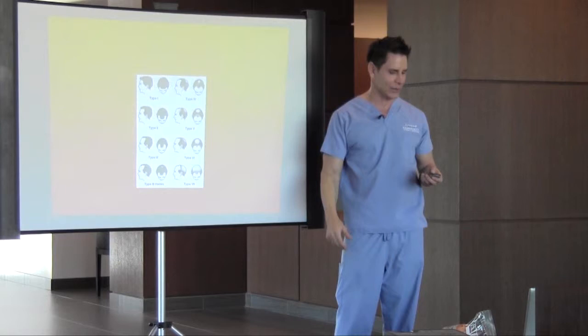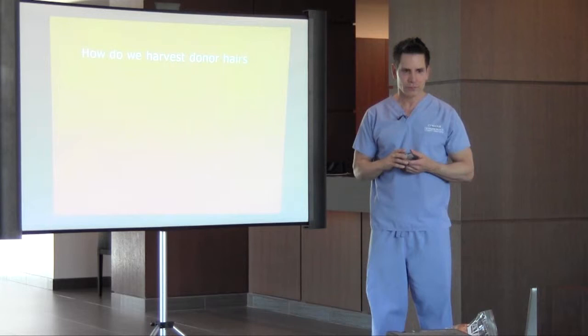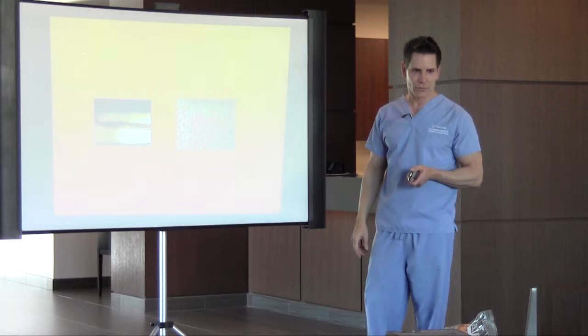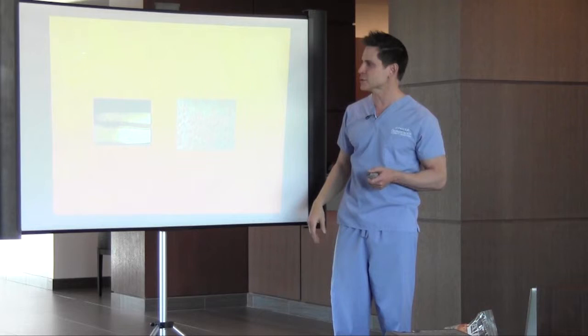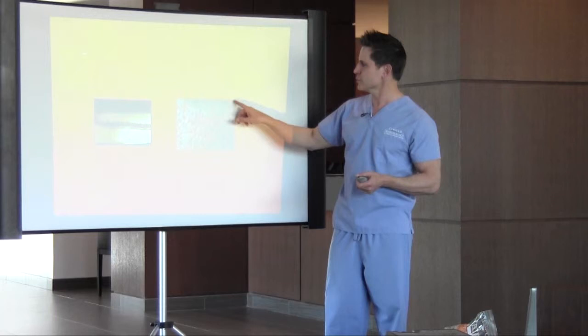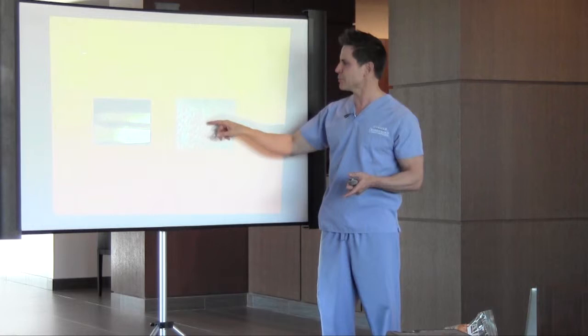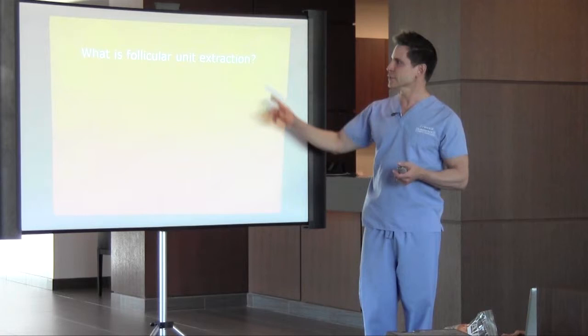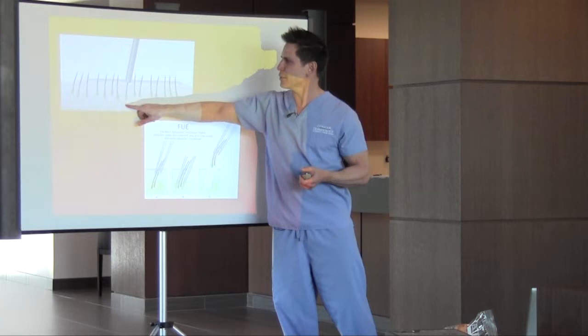To harvest the donor hairs, we numb up the back of the horseshoe area that's resistant to hair loss and cut a strip out. With follicular unit transplantation we take out the follicular clusters and pop them out. Follicular unit extraction, or FUE, is where we go in with a punch and punch down into the hair to extract individual follicles.